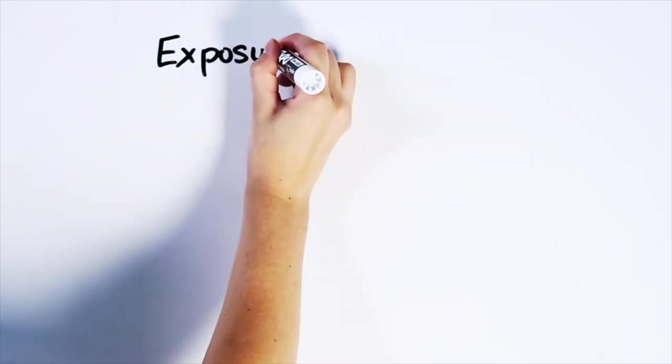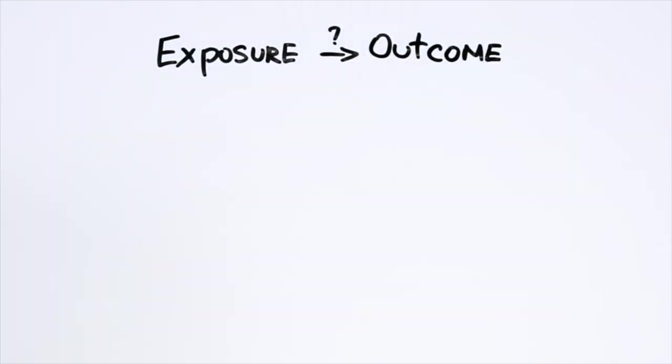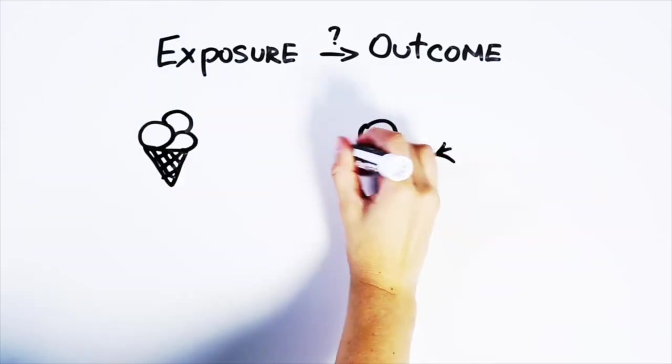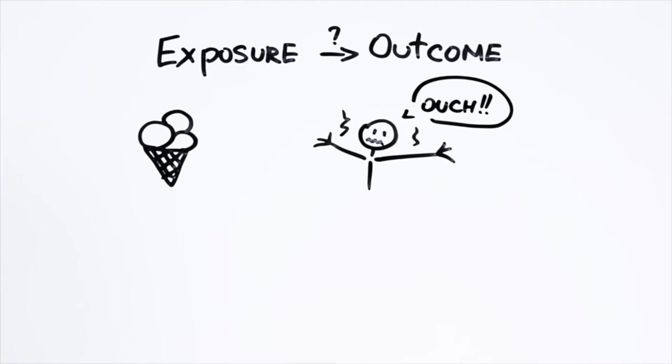To start with, just because someone was exposed to something and they got sick, doesn't mean the two events are related. The exposure may not have caused the sickness. For example, lots of people eat ice cream when it's hot, and lots of people get sunburned when it's hot. But ice cream clearly does not cause sunburn.